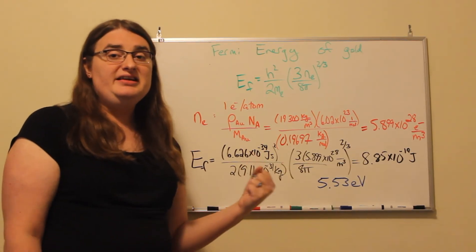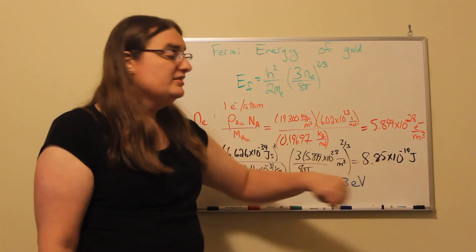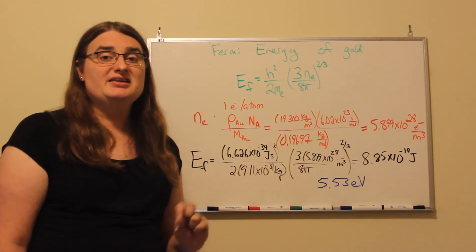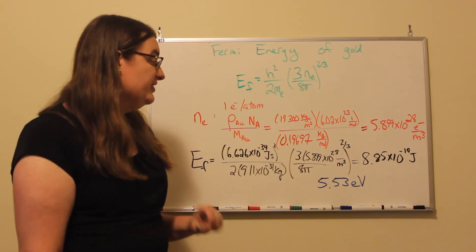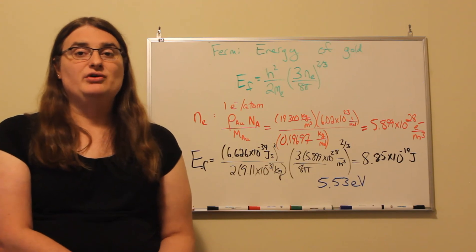So to convert that into eV, which is the unit that's most commonly used in atomic physics, divide it by 1.6 times 10 to the negative 19 joules per eV, gives me a Fermi energy of 5.53 electron volts.